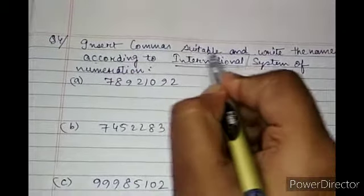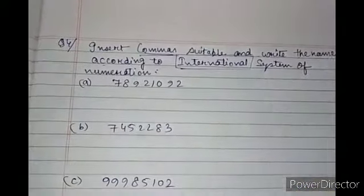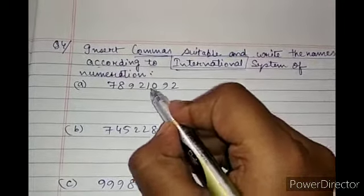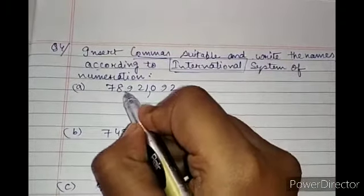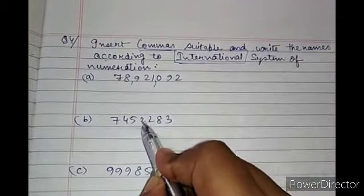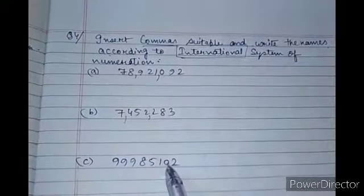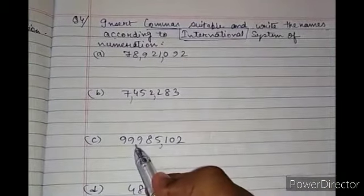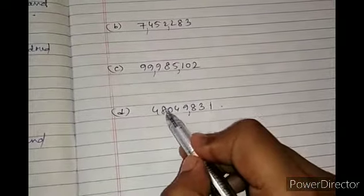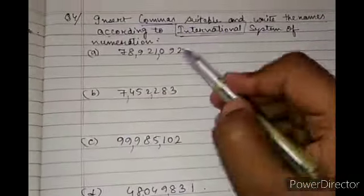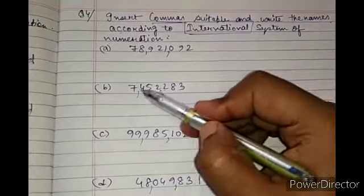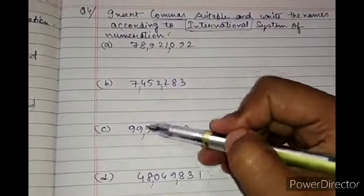Next: insert commas and write the names according to the international system. In the international system we place commas: ones, tens, hundreds, comma, thousands, ten thousands, hundred thousands, comma, million, ten million. We place commas after every three digits — three digits, comma, three digits, comma, three digits.